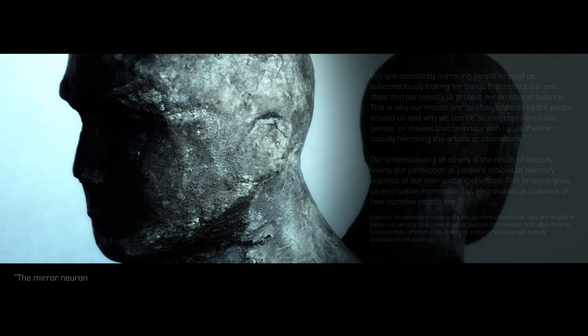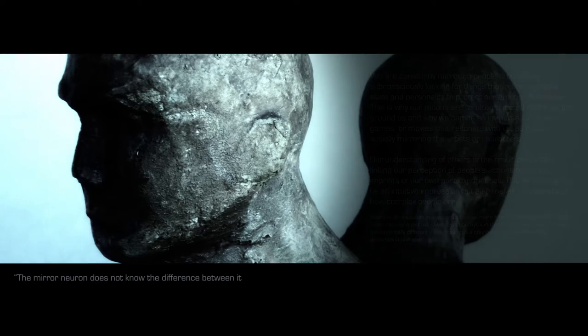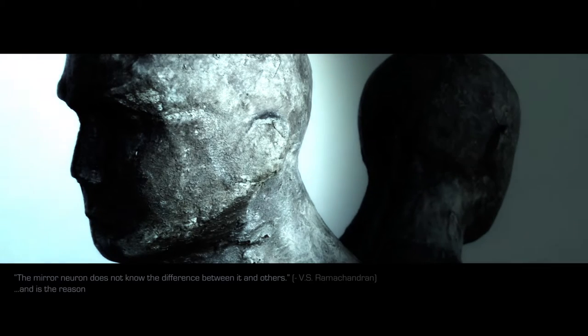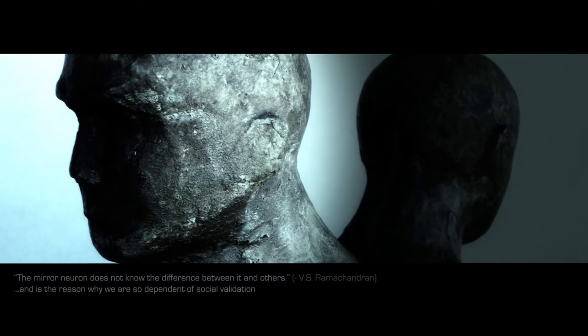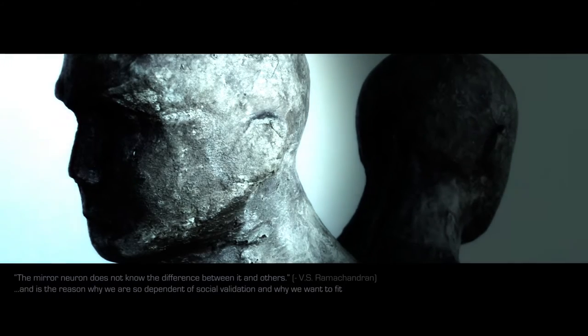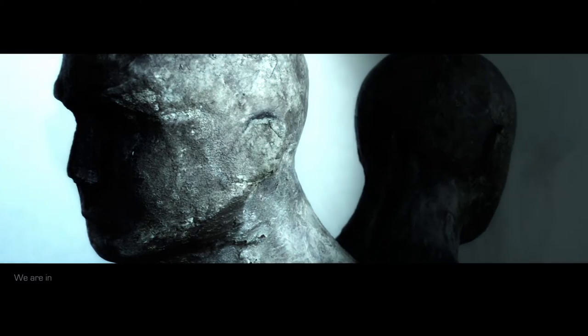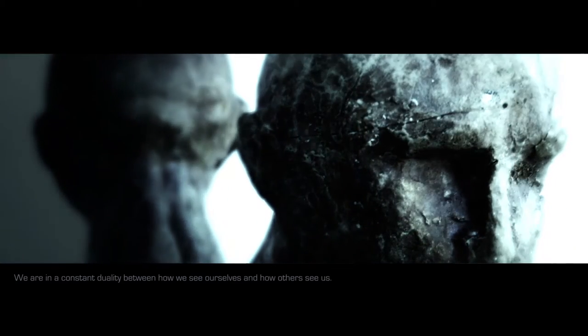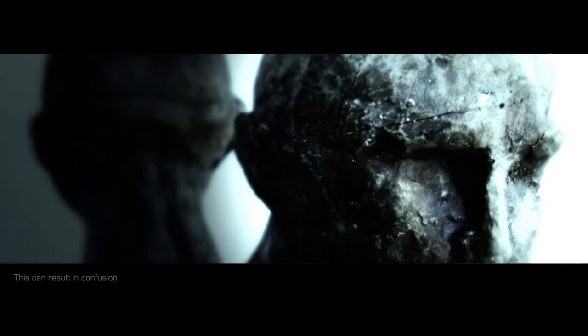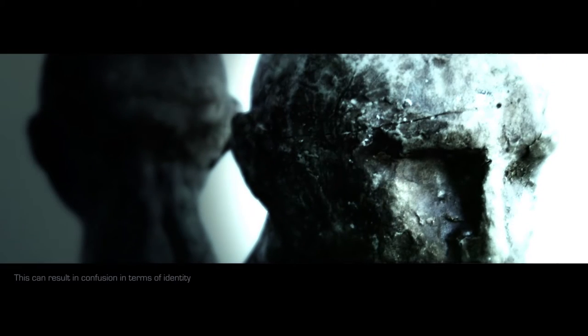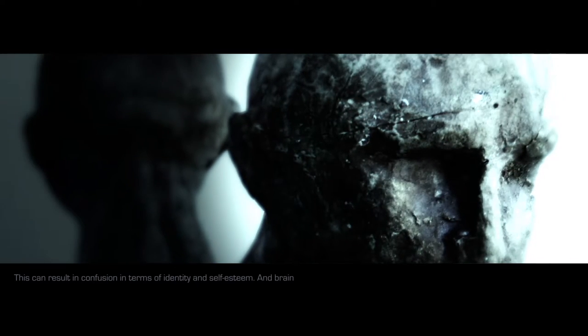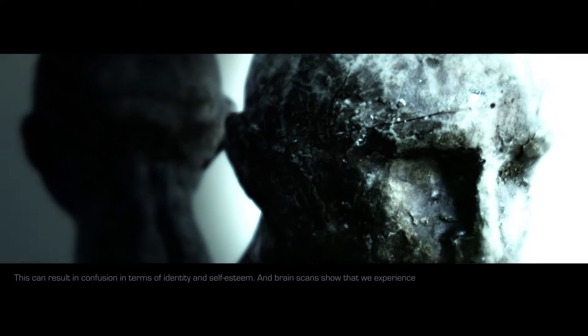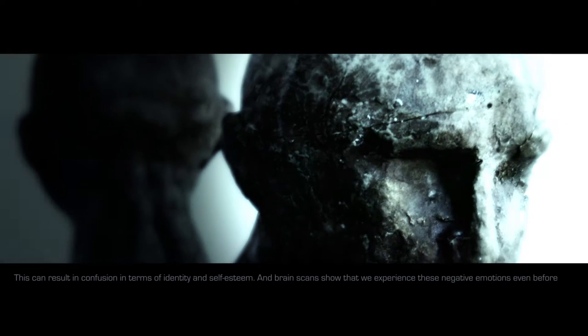The mirror neuron does not know the difference between it and others, and is the reason why we are so dependent on social validation and why we want to fit in. We are in a constant duality between how we see ourselves and how others see us. This can result in confusion in terms of identity and self-esteem. Self-observing and brain scans show that we experience these negative emotions even before we are aware of them.